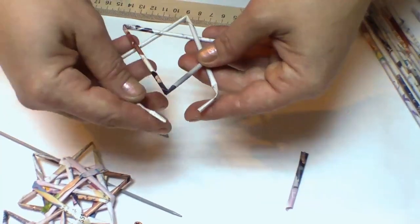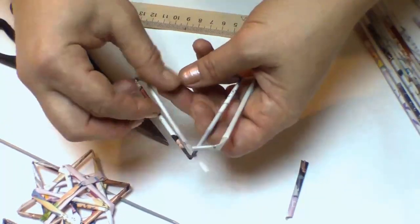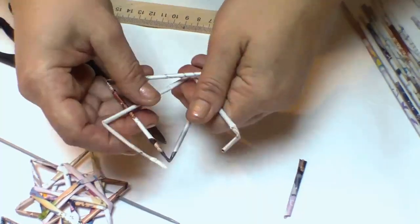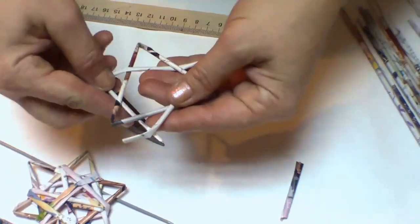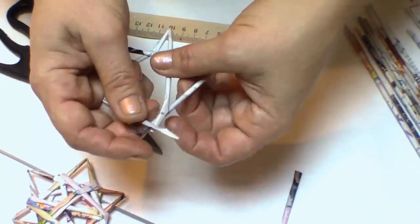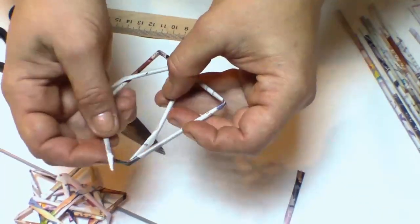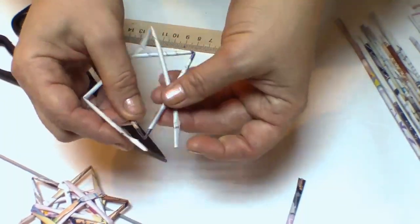Now cross them. One, two, three. They all have to be crossed this way as well.